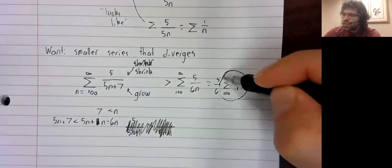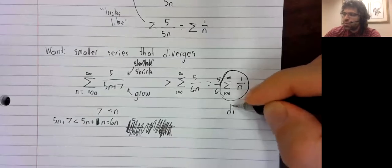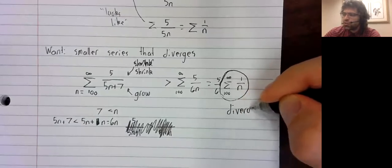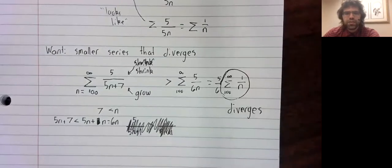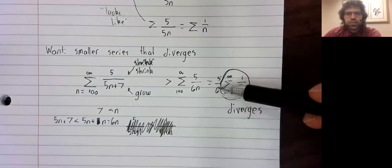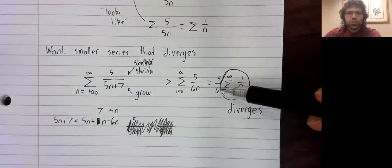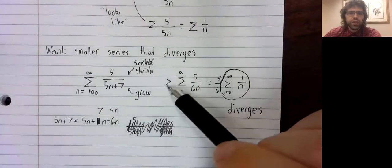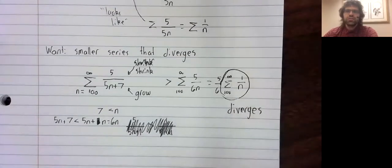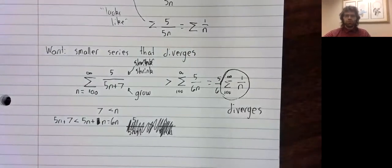And this series is the harmonic series, and it diverges. A divergent series times a non-zero constant still diverges. So this series is greater than a divergent series, and it diverges.